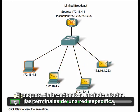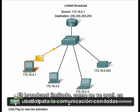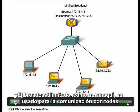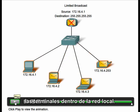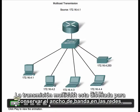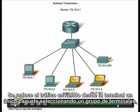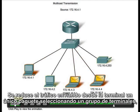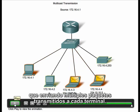A directed broadcast is sent to all hosts on a specific network. The limited broadcast, as seen here, is used for communication with all hosts on the local network. Multicast transmission is designed to conserve bandwidth on networks. It reduces traffic by enabling a host to send a single packet to a selected group of hosts rather than sending multiple unicast transmissions to each host.